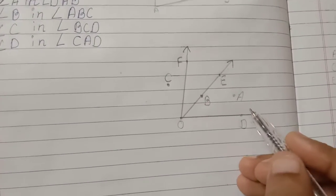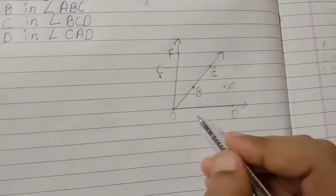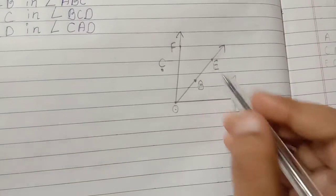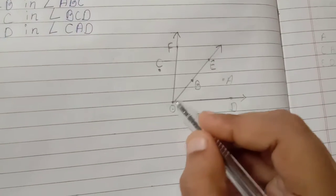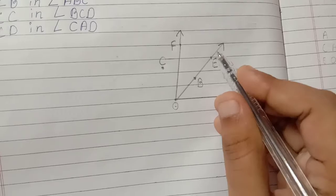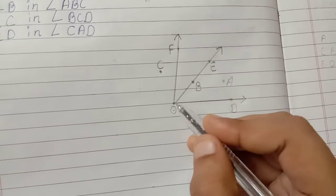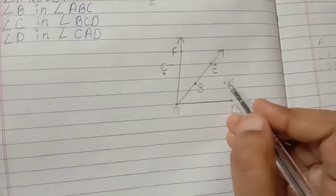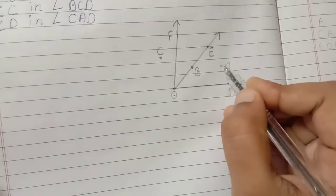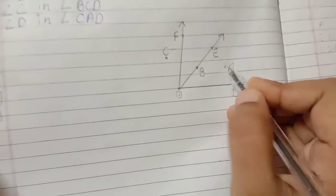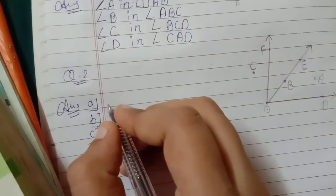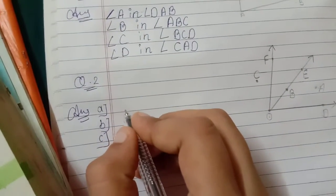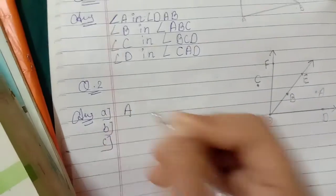So which points are inside of angle DOE? Can you see angle DOE? So what is the interior of DOE? It is point A. So your first answer is A.